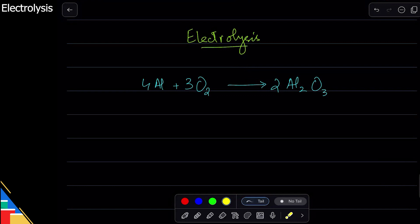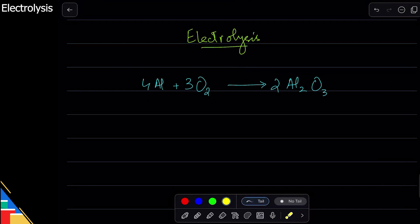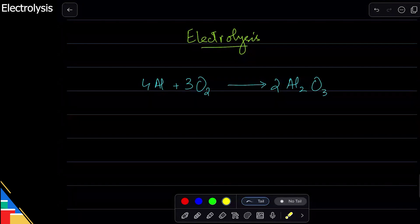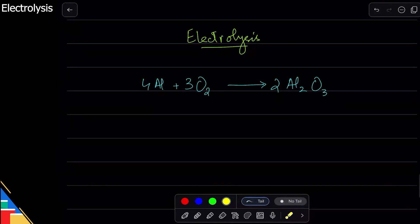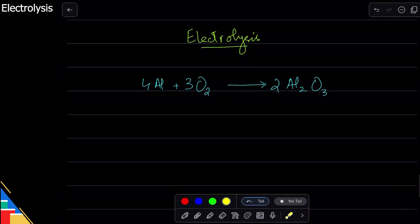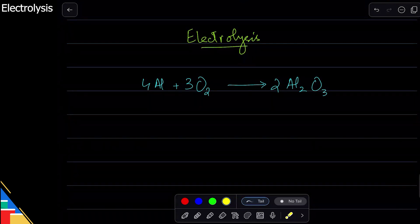Okay, so forward is redox, backward is redox. But forward is something that happens naturally all the time. Backward is what we can do by using electrolysis. Any questions? Anything you don't understand here? Okay, so now let's look into what exactly is electrolysis and how does it work.